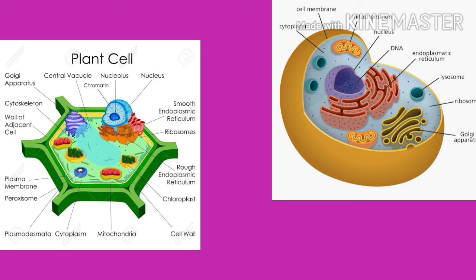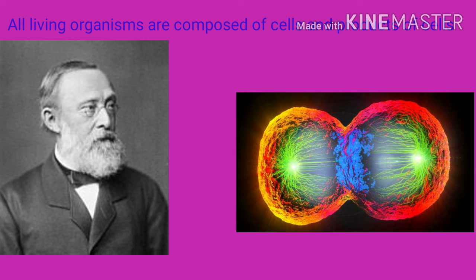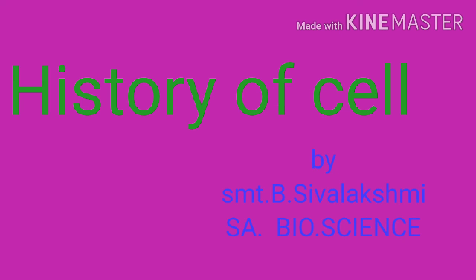They put forth the idea that all living organisms are made up of cells and products of cells. In 1855, Rudolf Virchow stated that new cells arise from pre-existing cells by cell division. This is called the cell theory.